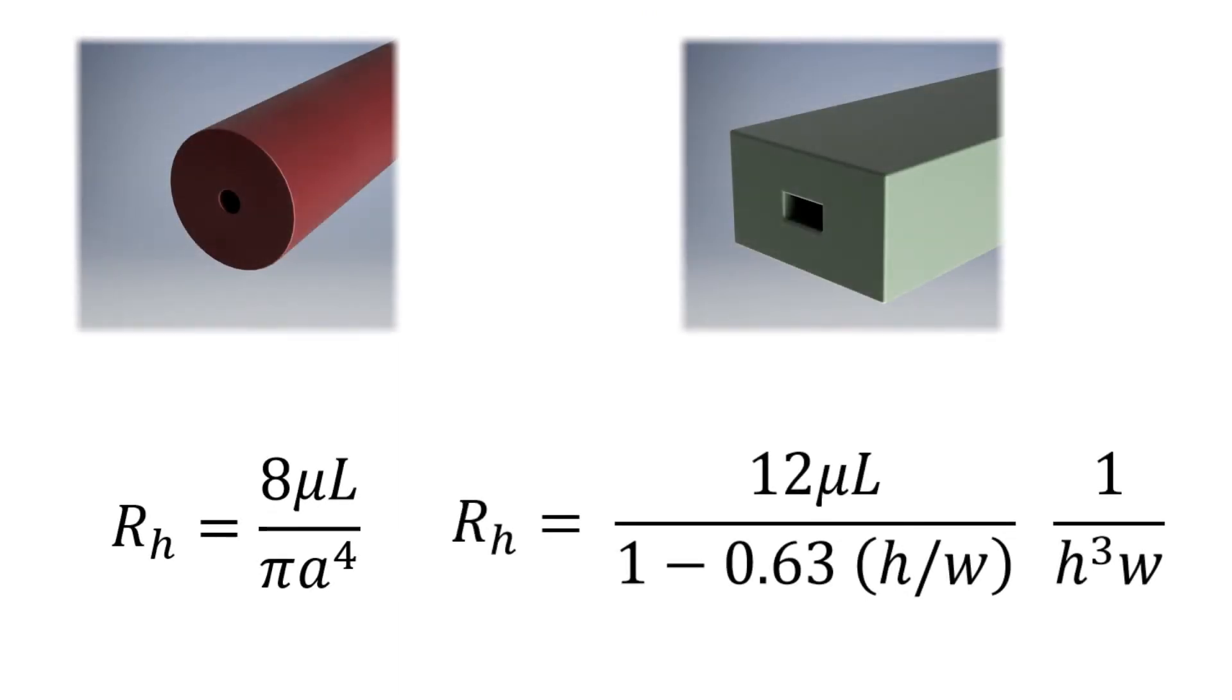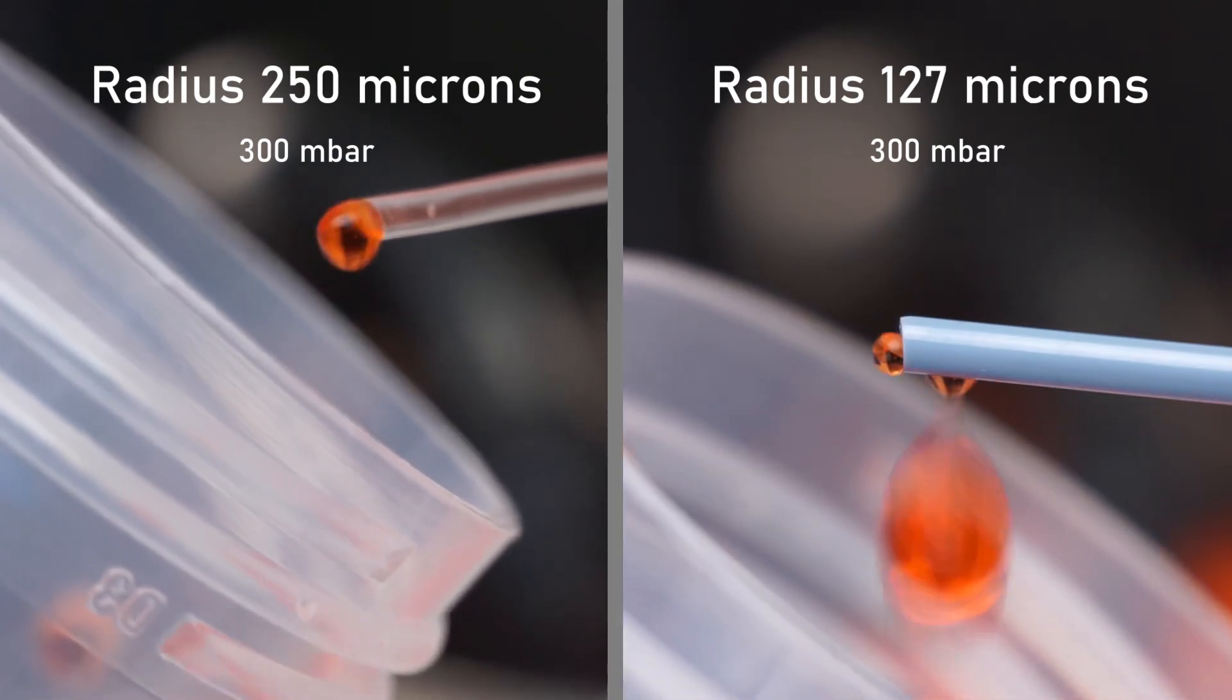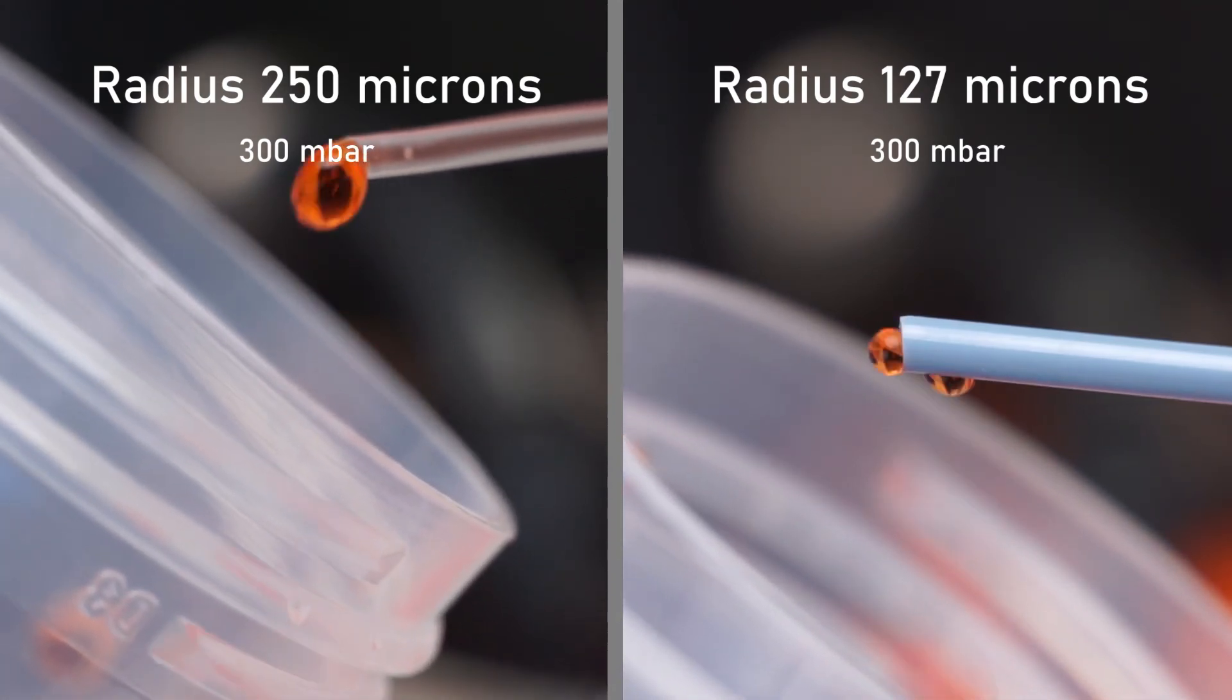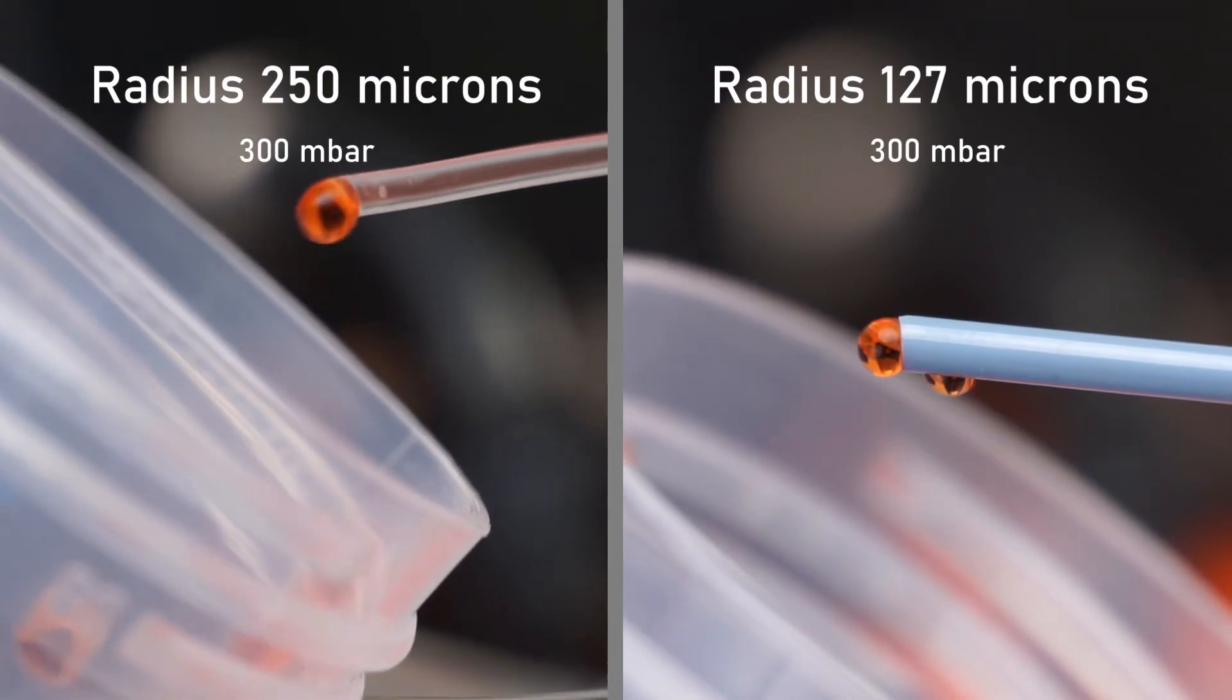In both cases, we can see how the radius, or characteristic length, follows an inverse proportion to the fourth power. In other words, a small change in these dimensions greatly affects the hydraulic resistance. Keep this in mind as it may come in handy.